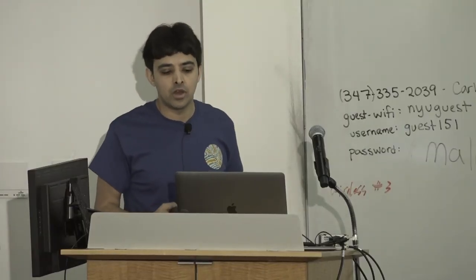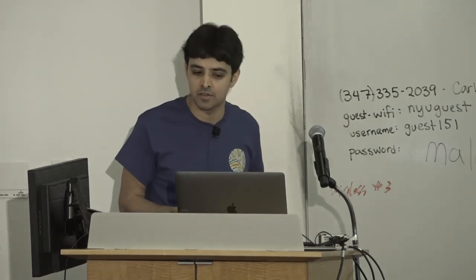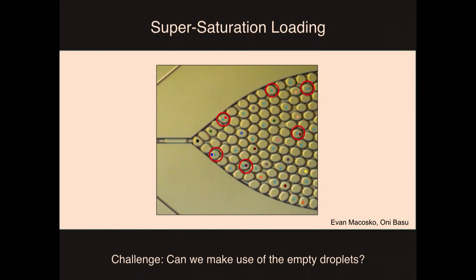For our next advance, I want to return to the issue of scale and how we can sequence even more cells. In the Drop-seq days, you load cells into droplets so that most droplets are empty — it's very unlikely any droplet would have more than one cell, so you can avoid doublets. But we have all these empty droplets that aren't actually doing anything, and 10X charges exactly the same amount for an empty droplet as for one that has a cell. So we wind up wasting money on all these useless droplets.